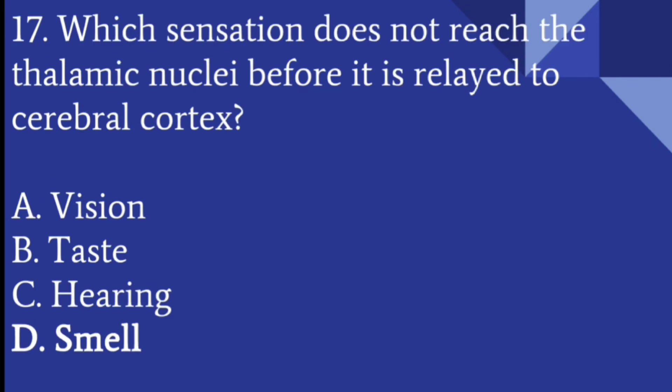Which sensation does not reach the thalamic nuclei before it is relayed to the cerebral cortex? The answer is smell. Relayed here means passing on — smell is passed directly to the cerebral cortex without first going through the thalamus.